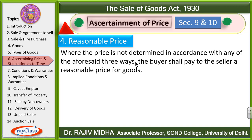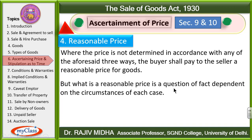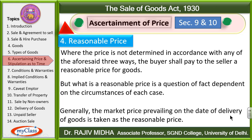Where price is not determined in accordance with any of the aforesaid three ways, then the buyer shall pay to the seller a reasonable price for the goods. What is a reasonable price is a question of fact dependent on the circumstances of each case. Generally, the market price prevailing on the date of delivery of goods is taken as the reasonable price.